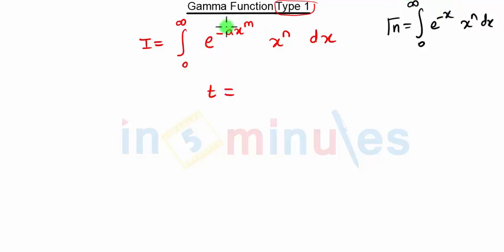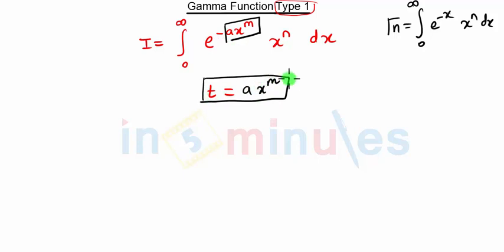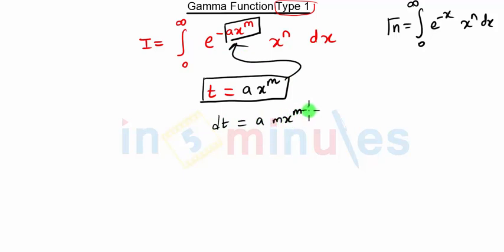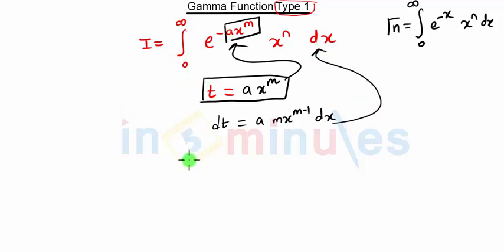So what we are going to do: in e raise to minus a·x raise to m, we are going to substitute t equal to x raise to m. After this substitution, we take the derivative — dt equals a·m·x raise to m minus 1, times dx. Then we substitute what dx is, and our limits will get changed. This will be more clear when we see the problem.